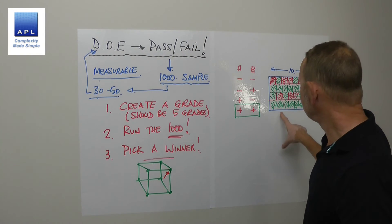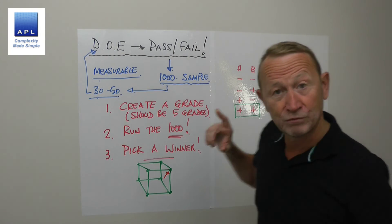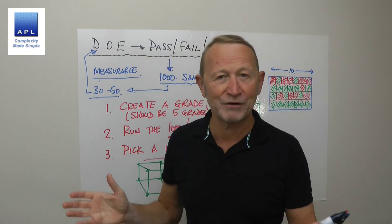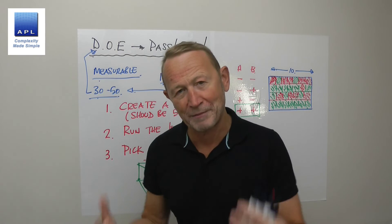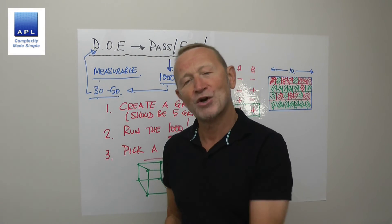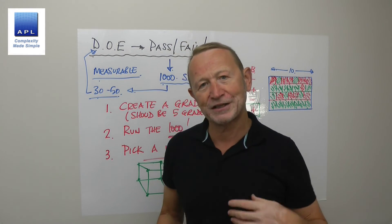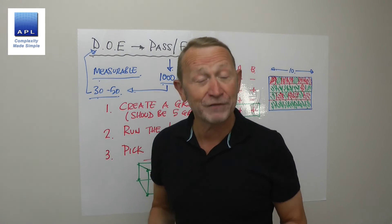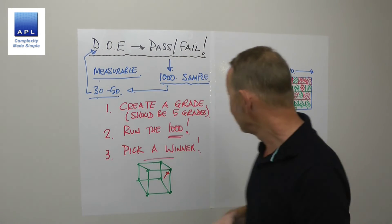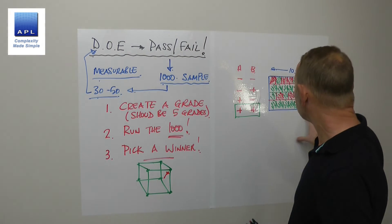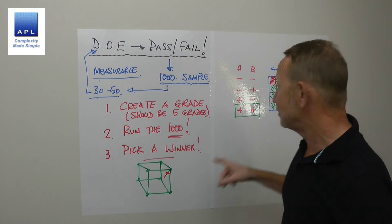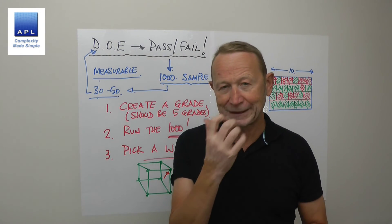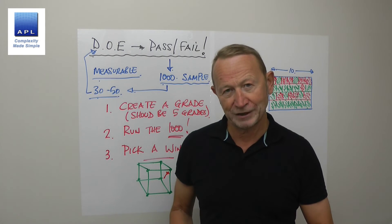At that point it's going to tell you true data: out of the 300 or 500 we made, we had a 1% defect rate, or a 10% defect rate, or whatever the reality of the situation is. So it's probably not going to be as good as with the 10 that you made. But pick a winner is the other choice.